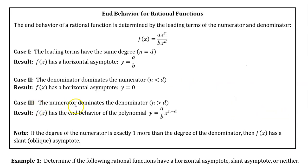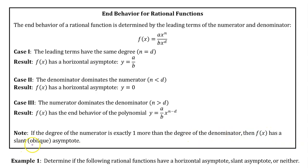Case 3: if the degree of the numerator is bigger than the degree of the denominator, then f(x) will have the end behavior of the polynomial y equals the quotient of the leading coefficients times x to the n minus d power, where n minus d is the degree of the numerator minus the degree of the denominator. If the degree of the numerator is exactly one more than the degree of the denominator, then f(x) has a slant asymptote — sometimes called an oblique asymptote — where the asymptote is a diagonal line.